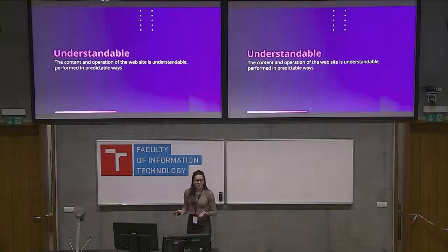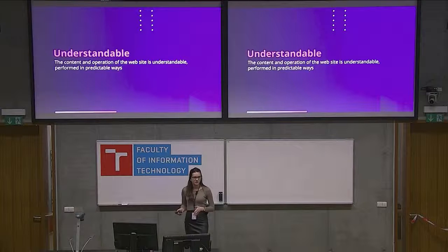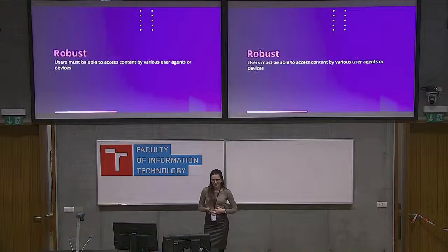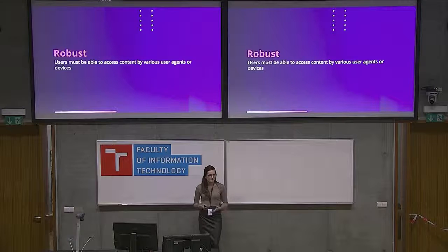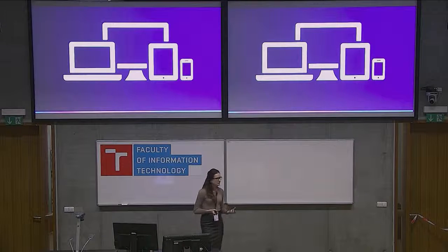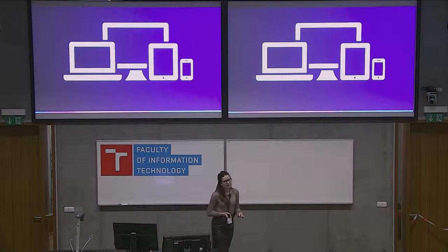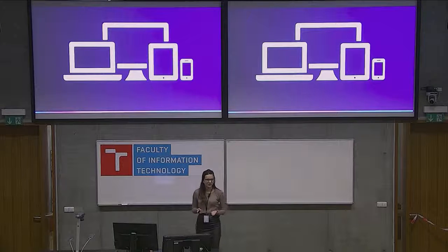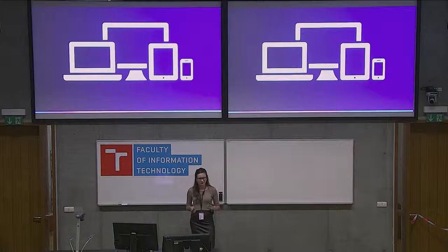Operable: there are users who don't like to use a mouse, or they can't because they have a broken arm, so they prefer to use just the keyboard. Your website should be operable, meaning all actions you can do with the mouse should still be achievable using the keyboard. Understandable: content and operation should be understandable and performed in predictable ways. And Robust: your content should be accessible regardless of which device your users use, as technologies and browsers constantly evolve.